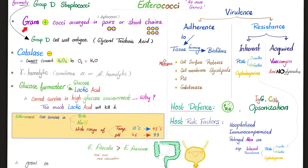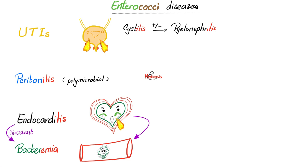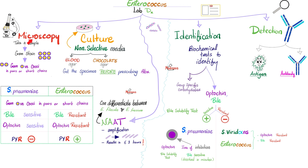Enterococci are group D, just like Streptococcus bovis — gram-positive, catalase-negative, and cause adherent biofilms. Some antibiotics will never work against them. Enterococci colonize your colon and urinary tract. Examples are Enterococcus faecalis, which is more abundant than Enterococcus faecium. Diseases caused by Enterococci include UTIs, peritonitis, endocarditis, and bacteremia. Under the microscope using gram stain, Enterococcus looks very similar to Streptococcus pneumoniae — both were Streptococci in the past, but now Enterococcus has its own genus.